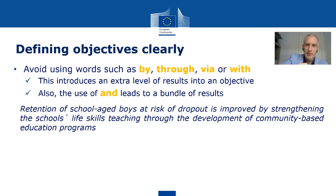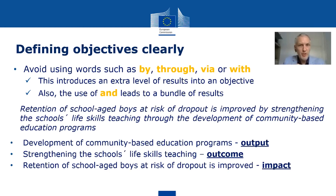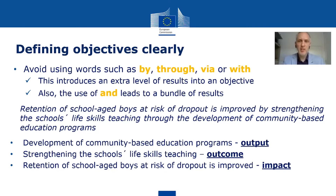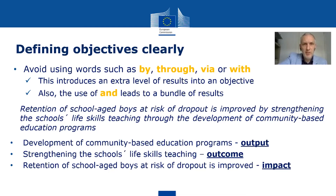So here, the word 'through' in the middle connects two or even three levels depending on interpretation. We can see it like this: the output is the development of education programs; the outcome is strengthening schools' life skills teaching, because improved teaching is behavior of the teachers, who may be our target group; and the impact is improved retention. This is how you split objectives that are in fact multiple results.